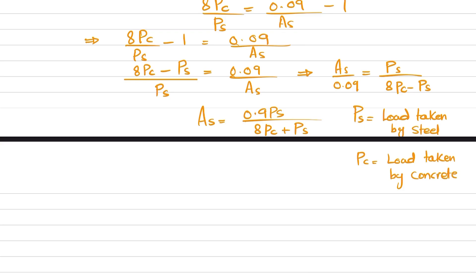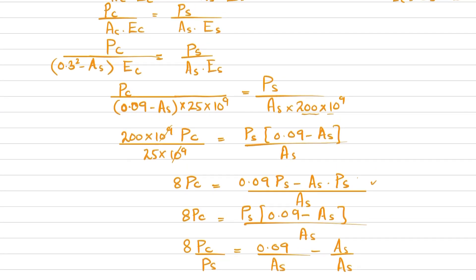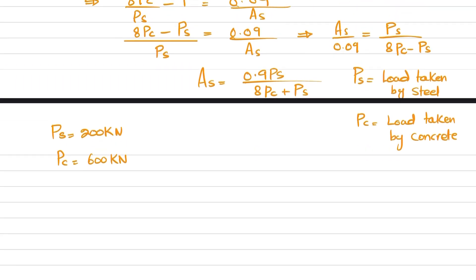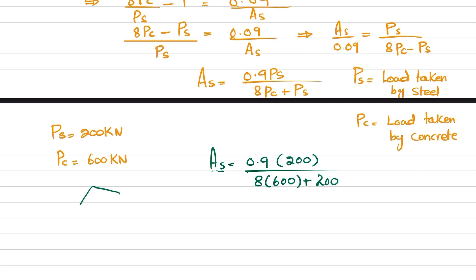We calculated Ps = 200 kN and Pc = 600 kN. Substituting into the formula: As = 0.09 × 200 / (8 × 600 + 200).